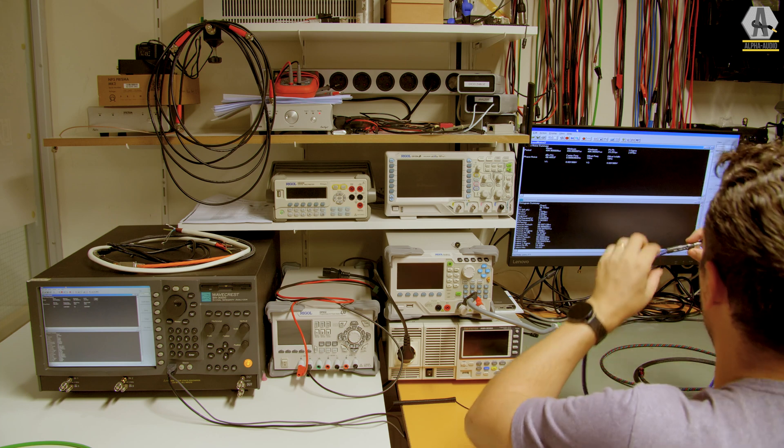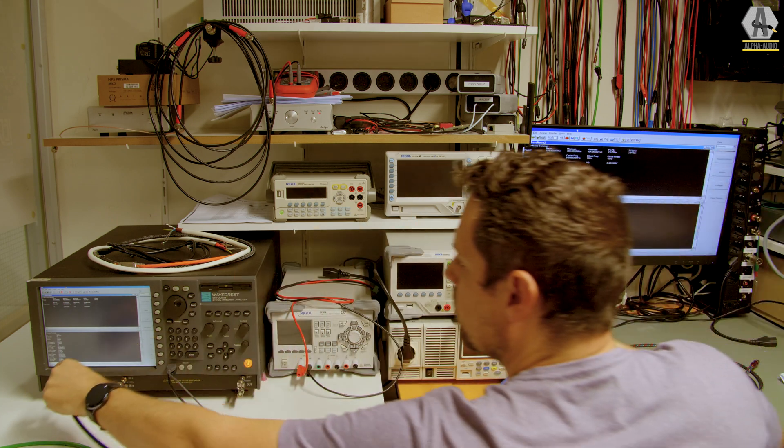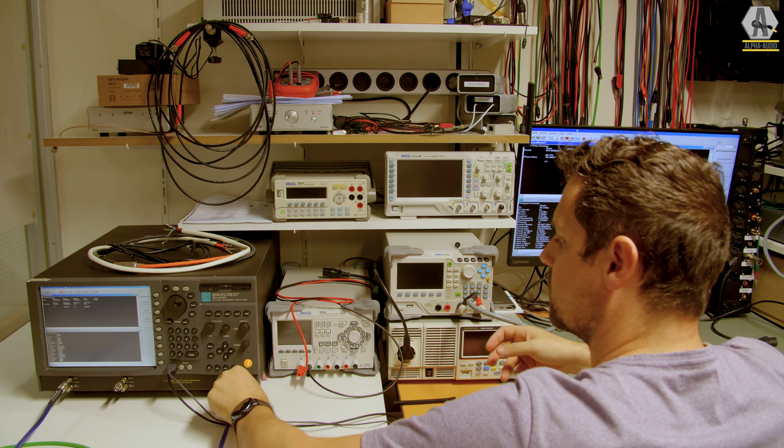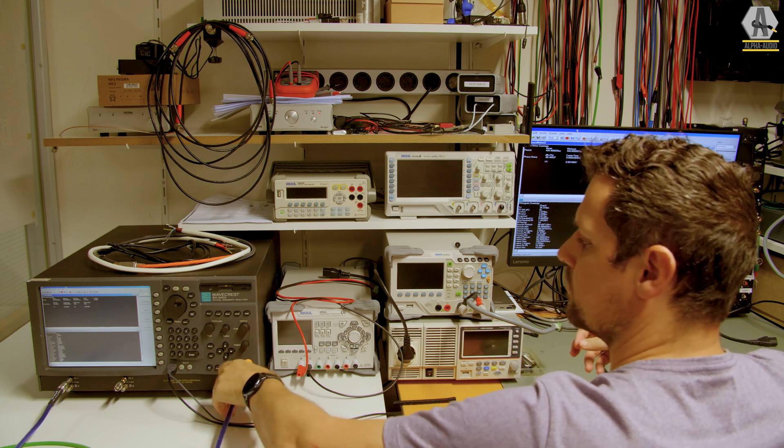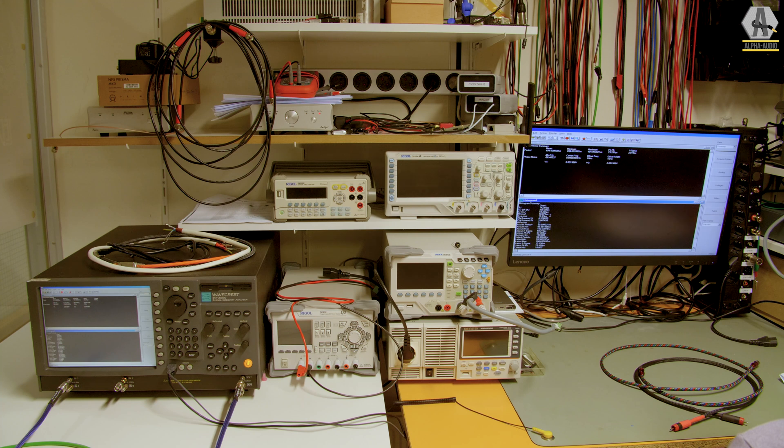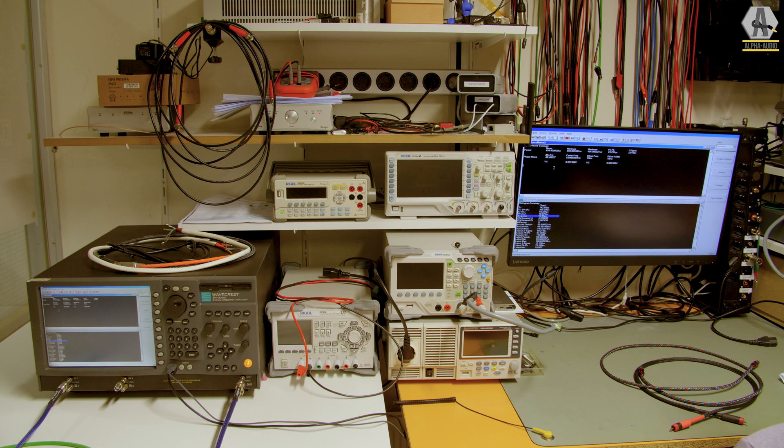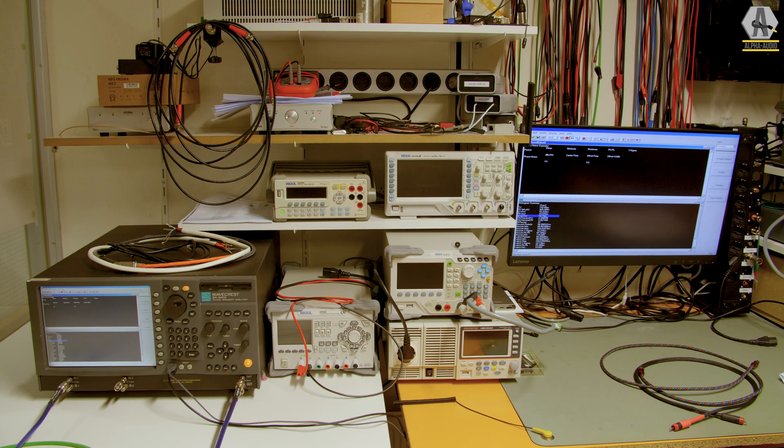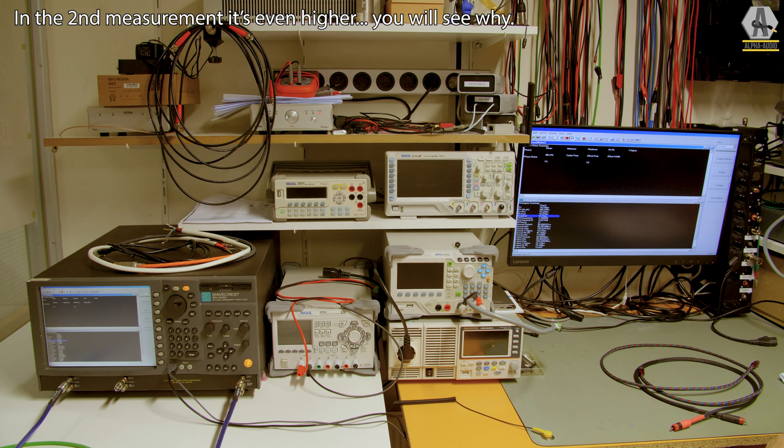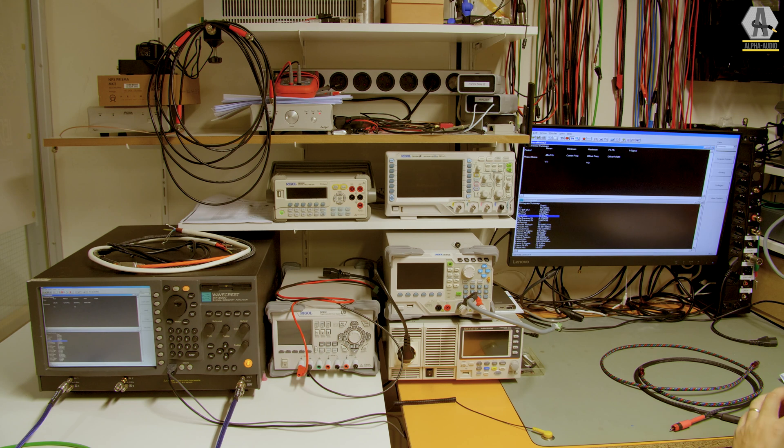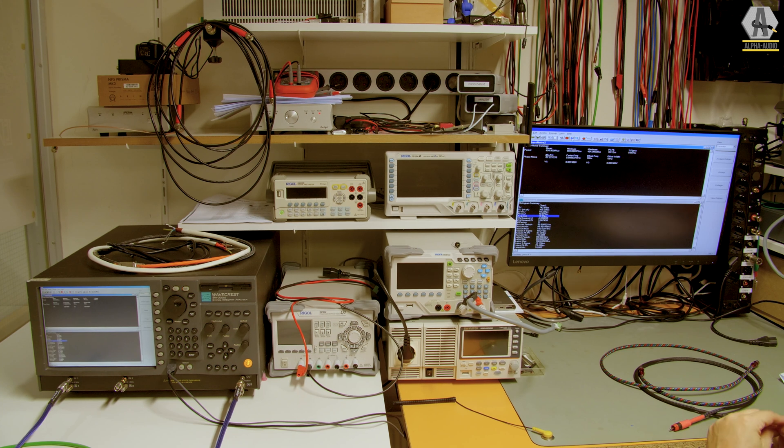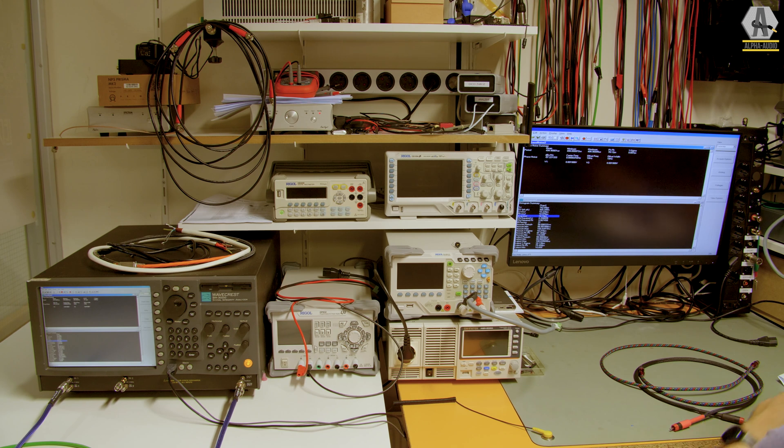And then we have another one and it has a marker on it. Let's see what this one does. Wow, that's 10.15. So that's actually four times worse than the other one. 10.15 picoseconds. There must be something wrong with that cable. Let's see what the phase noise is. Minus 57. That's a lot worse.